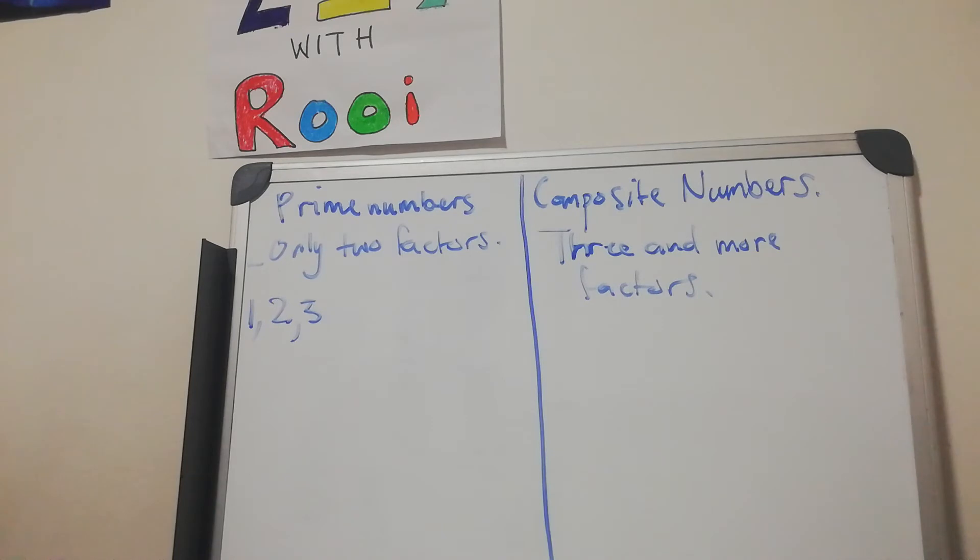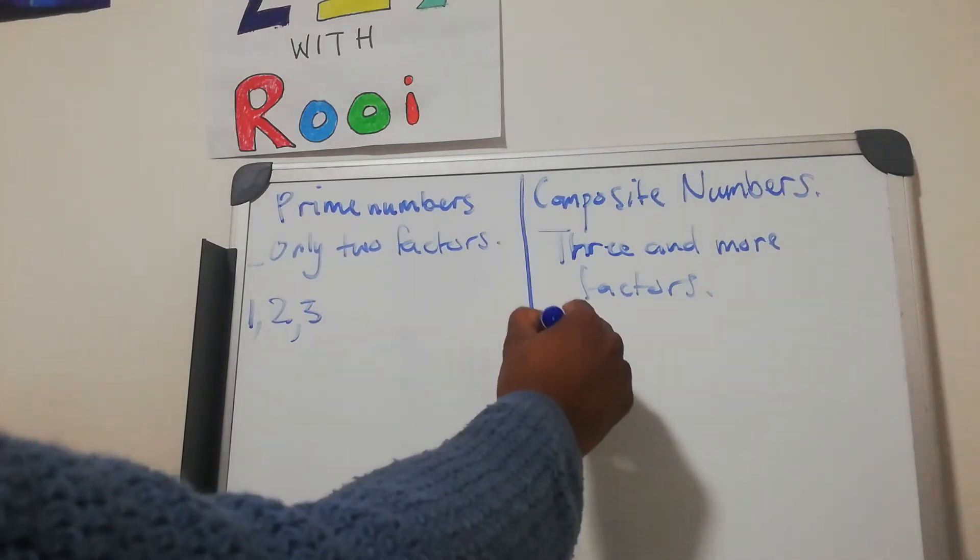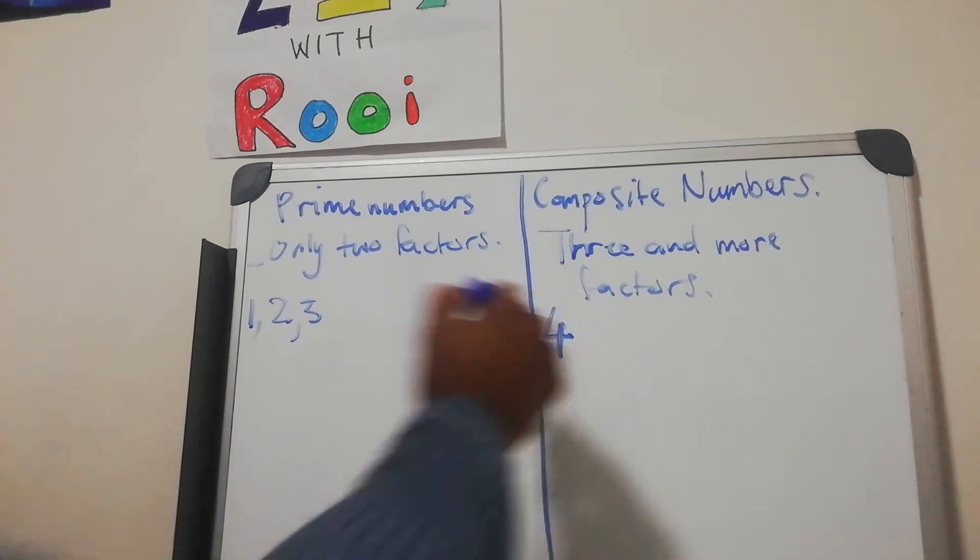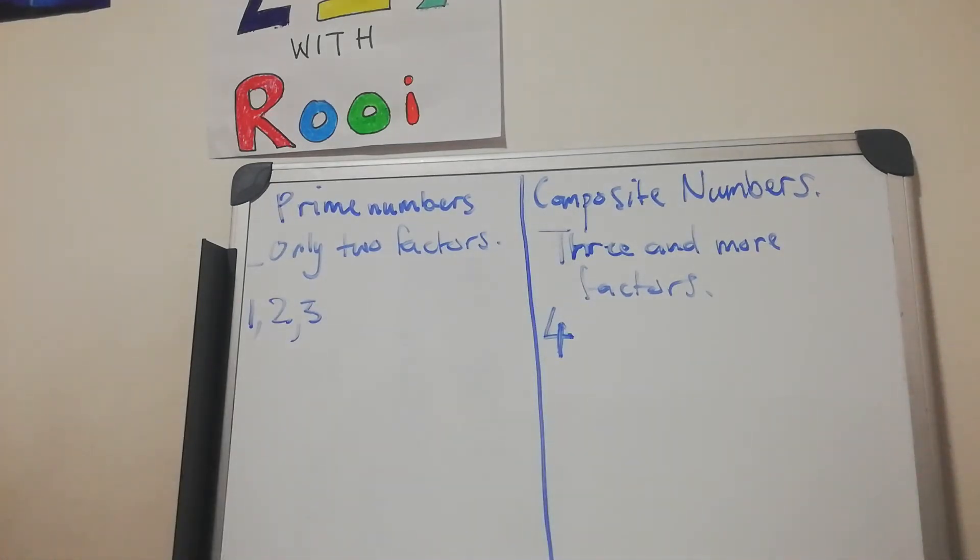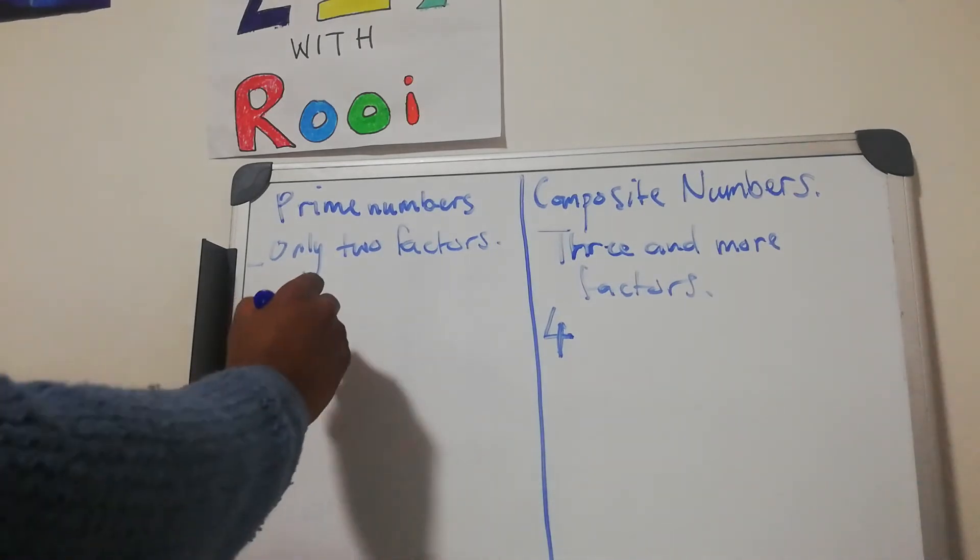Four, however, is not a prime number because four can be divided by four itself, two, and one. So four in that regard is going to be a composite number because it has three and more factors, in this case only three factors.